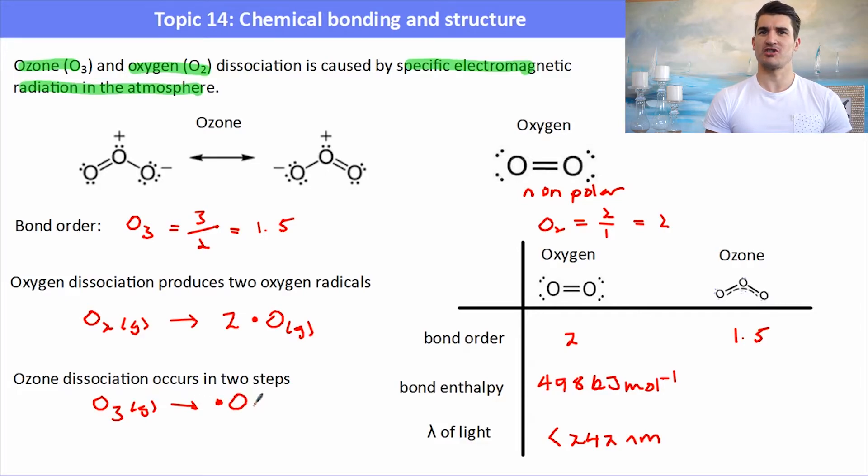Ozone dissociation occurs in two steps. Firstly the ozone breaks down into an oxygen radical and then oxygen gas, and then that oxygen radical is able to react with another ozone molecule to form two oxygen molecules. So we've got breakdown of ozone. The bond enthalpy for breaking the bond in ozone is 364 kilojoules per mole.